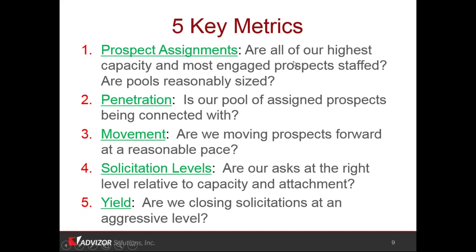Prospect assignments: are all of our highest capacity and most engaged prospects staffed? And are the pools reasonably sized? Then, once they're assigned, is there a pool of assigned prospects being connected with in a reasonable period? If I have 100 prospects in a year, I ought to be able to connect with 80 to 85% of them and visit half of them. If I'm connecting with 50%, something's wrong. Movement: are we moving prospects forward at a reasonable pace? Some field officers will get prospects stuck in qualification, and some get the solicitation out but have trouble closing. You want to look at this and bring in best practices where it can be applied.